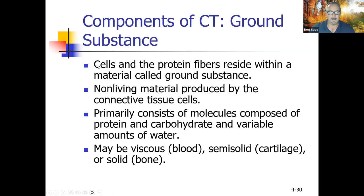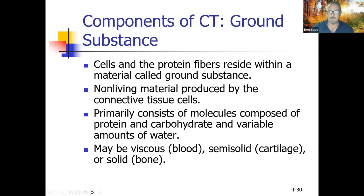Ground substance is the material in which cells and protein fibers reside — everything that's not cells or protein fibers. It's produced by connective tissue cells called fibroblasts and primarily consists of molecules composed of protein and carbohydrate with variable amounts of water. In bone, there's not as much water; cartilage has a little more; and blood is approximately 50% water. Consistency ranges from viscous (blood) to semi-solid (cartilage) to solid (bone).